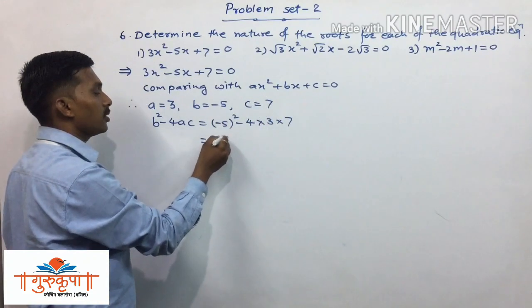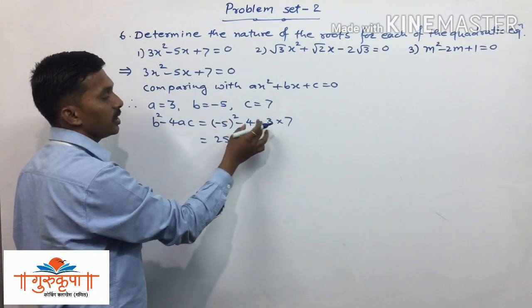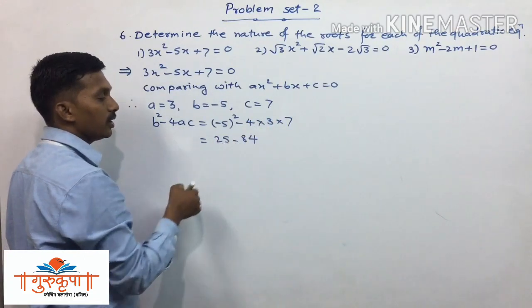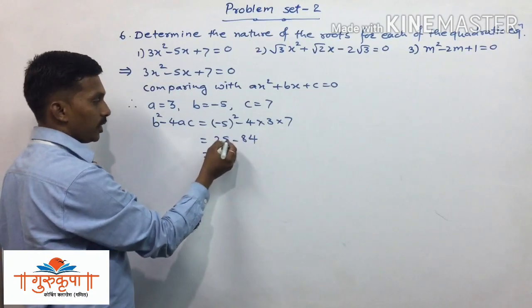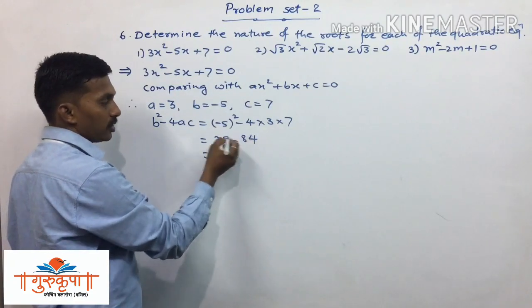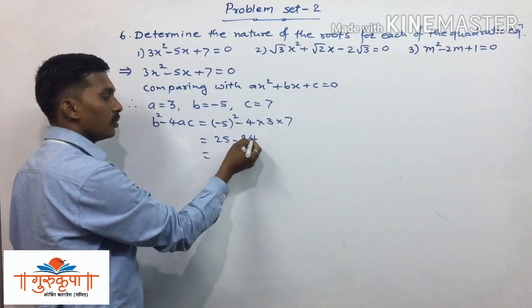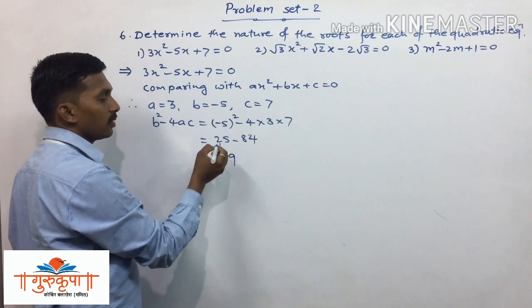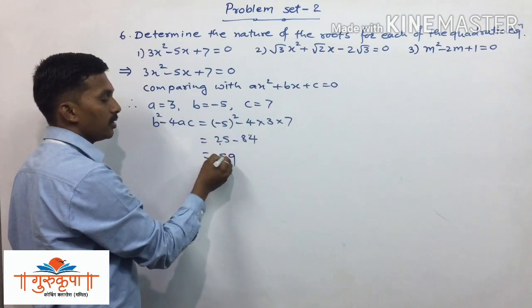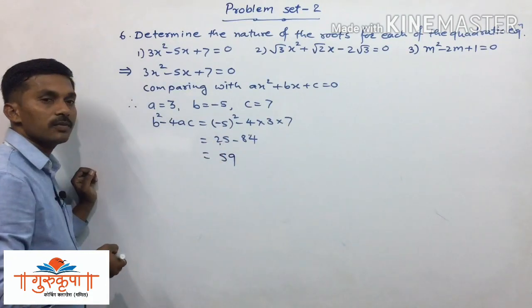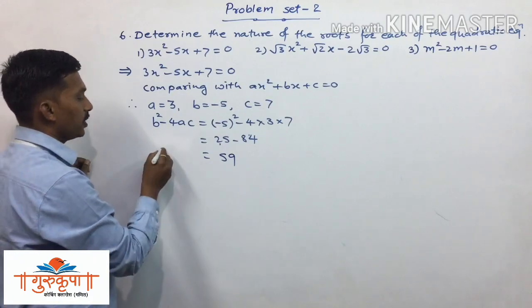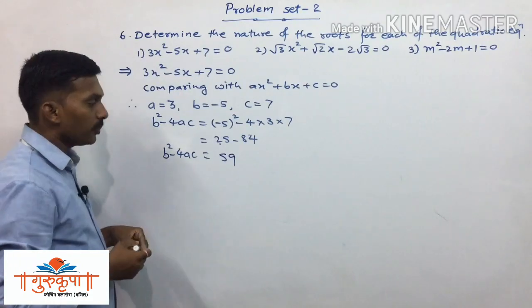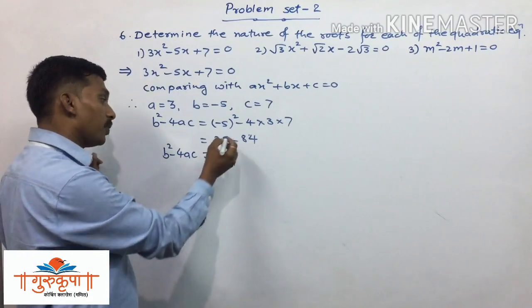Minus 5 squared is 25. Then 4 times 3 is 12, and 12 times 7 is 84. So we have 25 minus 84. Performing the subtraction: 14 minus 5 is 9, then 8 minus 3 is 5, giving a result of 59. Since the bigger number is negative, b squared minus 4ac equals negative 59.